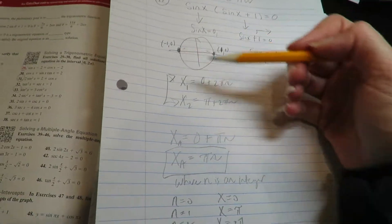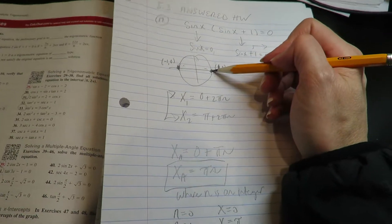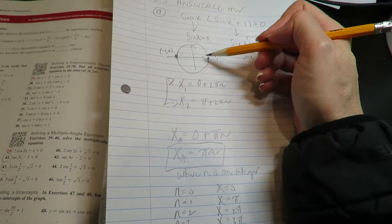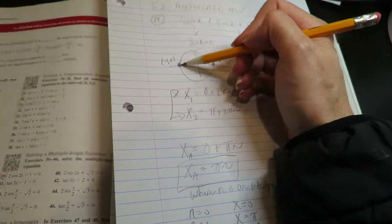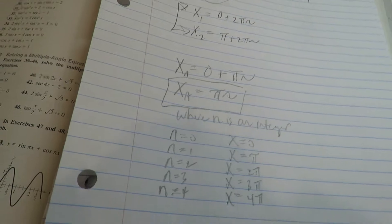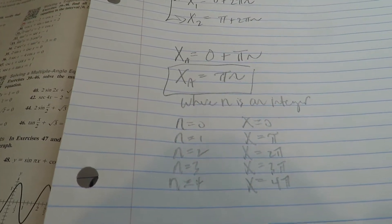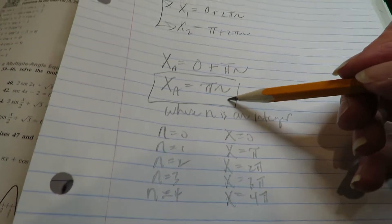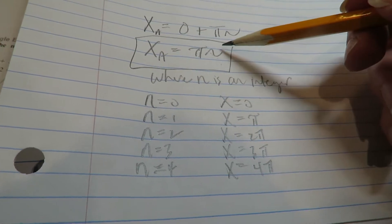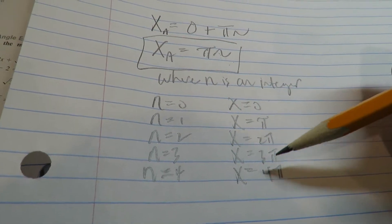Zero, pi, two pi, three pi, four pi, five pi, six pi, seven pi, off to infinity. So it's impossible to write an infinite amount of answers. That's why you're coming up with this equation that generates all these answers.